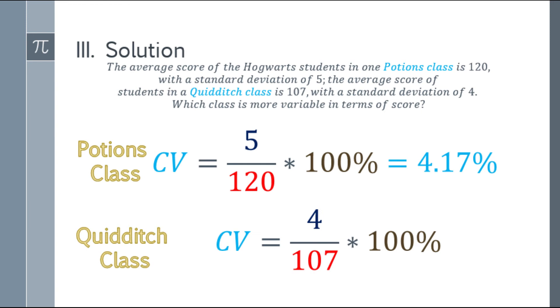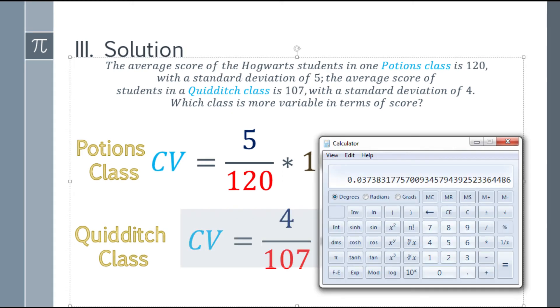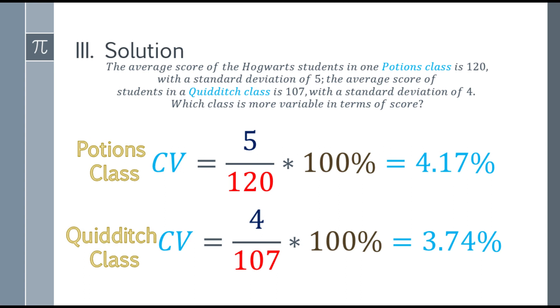And the next one, for the Quidditch class, that will be 4 divided by 107. And that will be 0.03738 and so on. And that's the time you multiply it by 100 and round it up. And you will get a final answer of 3.74%.